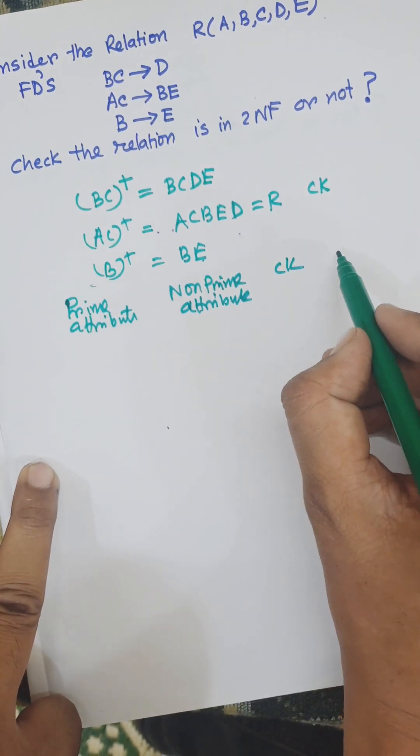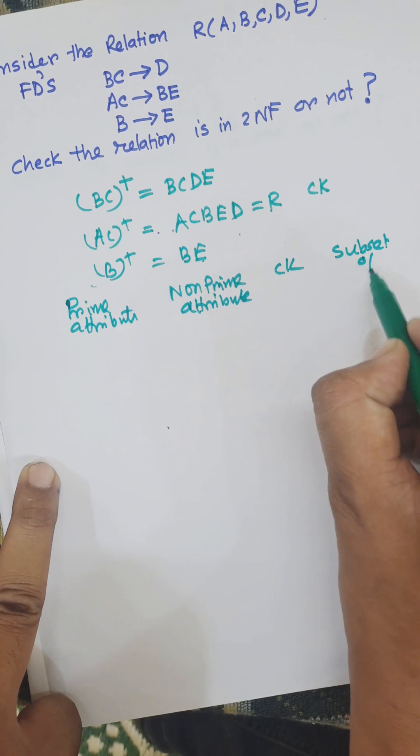We also have columns for the candidate key (CK) and subset of CK.